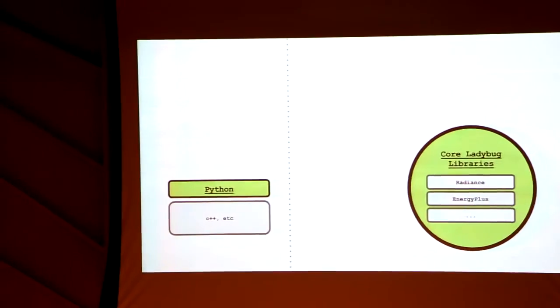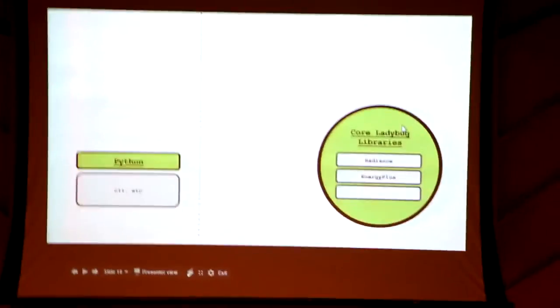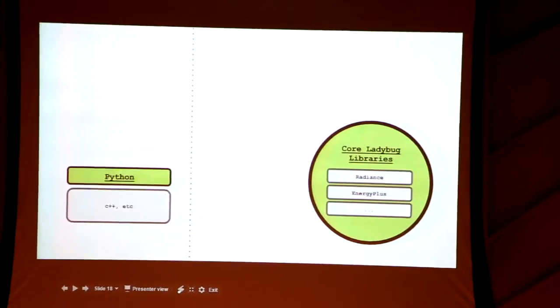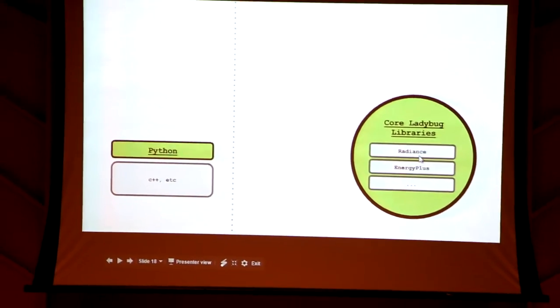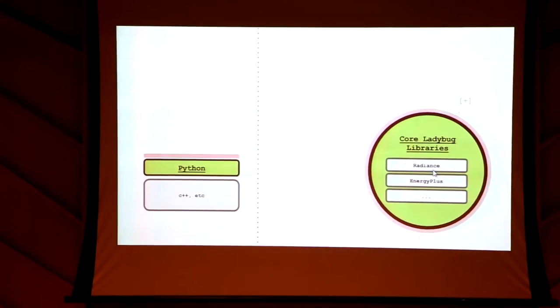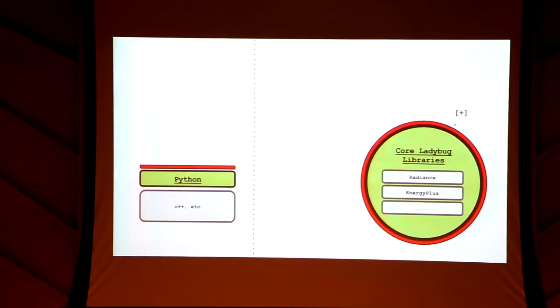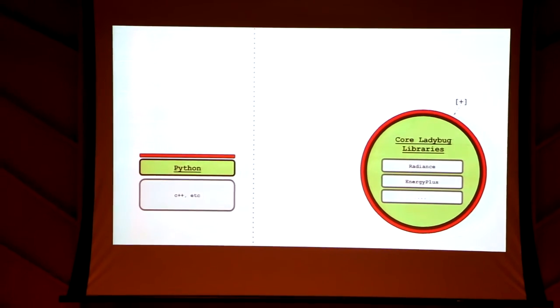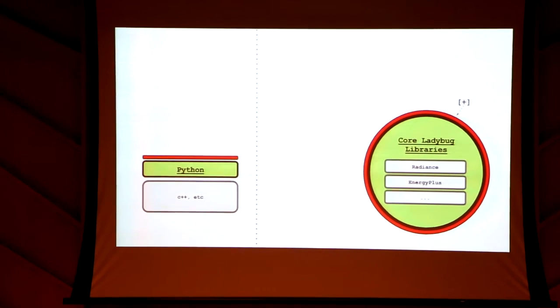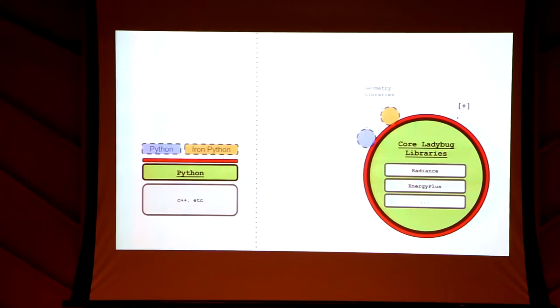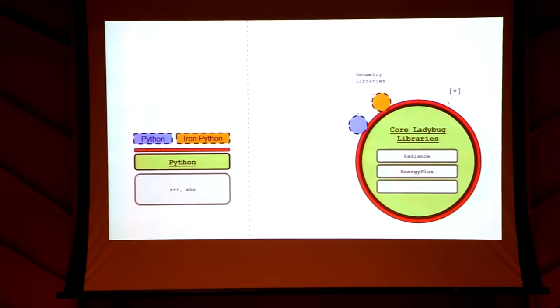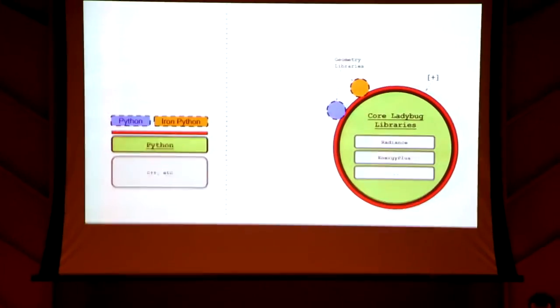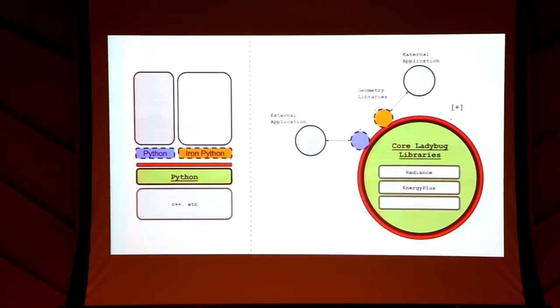Everything is redesigned to work like this: we have a core library. We're rewriting the core library of tools in pure Python, which is a wrapper for the analysis engines we have. Right now we're using the binaries. Then we have another level on top called 'plus' - if you have Ladybug there's Ladybug plus, Honeybee has Honeybee plus, Butterfly has Butterfly plus. The plus area is where you write your geometry libraries. Right now we have two: one for Grasshopper and one for Dynamo, both in IronPython, and both talk to external applications.